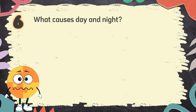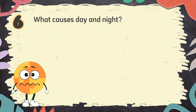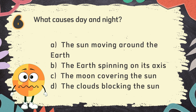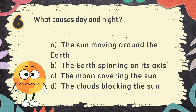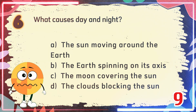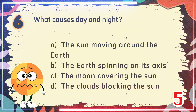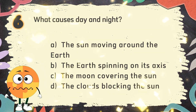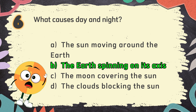Number 6: What causes day and night? The choices are: A. The sun moving around the Earth, B. The Earth spinning on its axis, C. The moon covering the sun, D. The clouds blocking the sun. The correct answer is B. The Earth spinning on its axis.